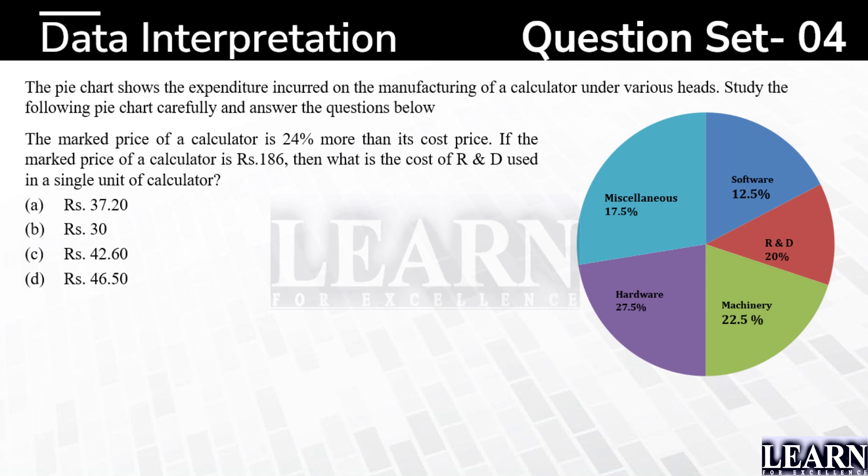Let's have a look at the question. The pie chart shows the expenditure incurred on the manufacturing of a calculator under various heads. Study the following pie chart carefully and answer the questions below. The marked price of a calculator is 24% more than its cost price. If the marked price of a calculator is Rs. 186, then what is the cost of R&D used in a single unit of calculator?